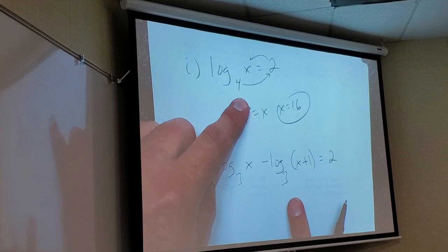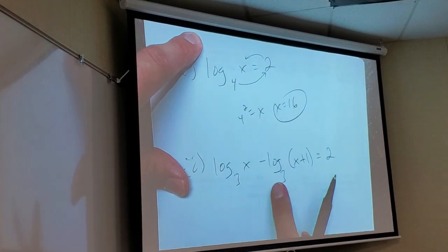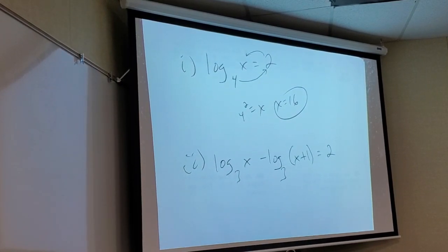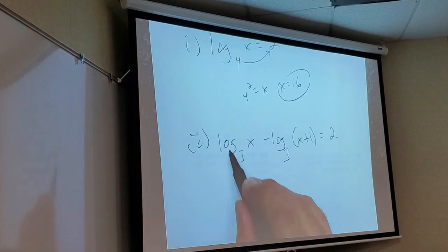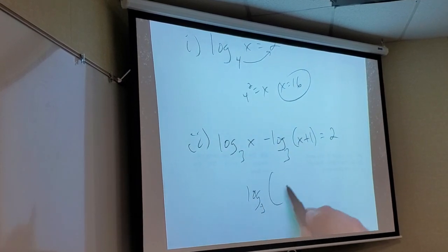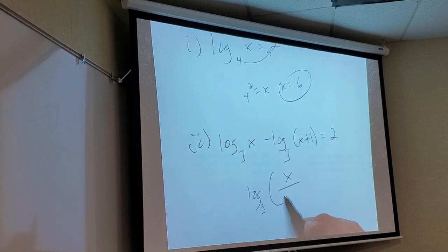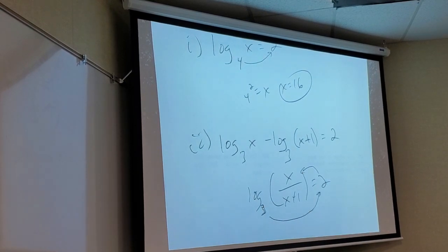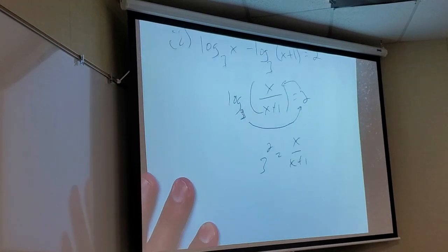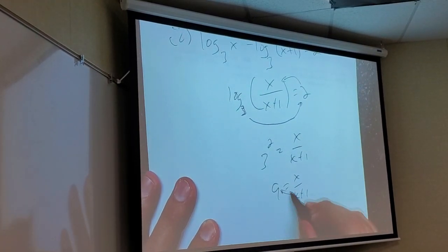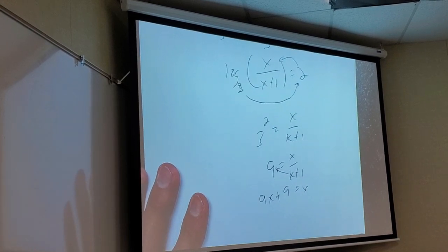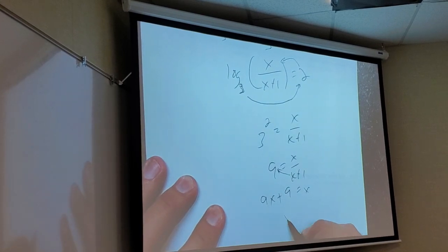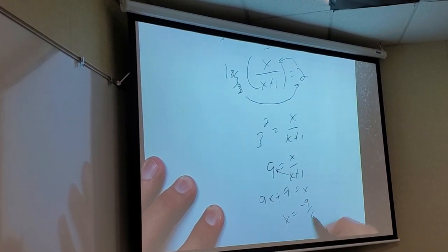Can you see the main difference between these two? This one's got two logs. Can I make this a single logarithm? Yeah, because it's the same base. So there would be x over x plus 1. Then I can do 3, that's a 3 down there. 2 squared equals x over x plus 1. So I get 9 equals x over x plus 1. I multiply this up and I solve for x.